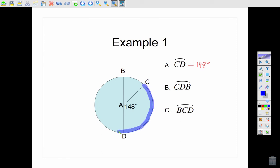So if I start at C, I go towards D, all the way around to B. And you'll see that it is everything except for that little piece of the pie in there.